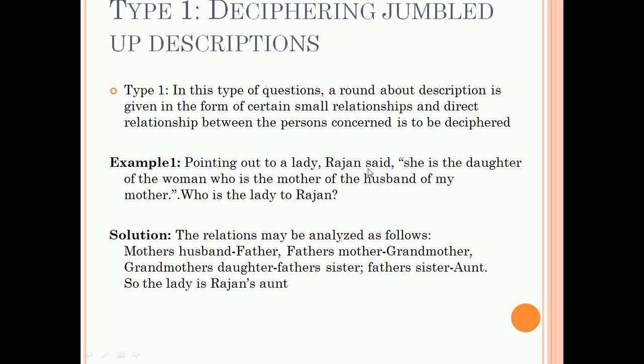Example: Pointing out to a lady, Rajan said she is the daughter of the woman who is the mother of the husband of my mother. So who is the lady to Rajan? The relations may be analyzed as follows: mother's husband is father, father's mother is grandmother, grandmother's daughter is father's sister, and father's sister is aunt. So the lady is Rajan's aunt.